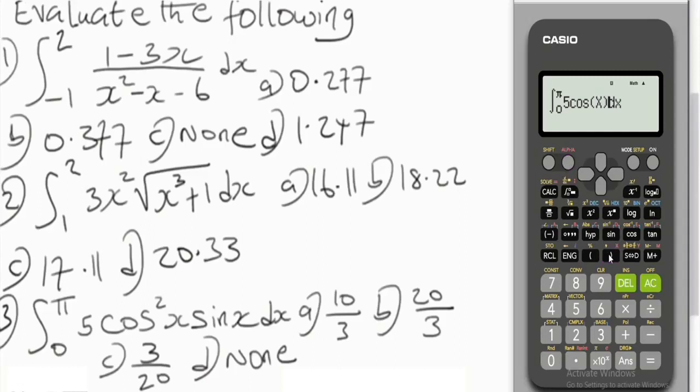You could do cos x times cos x but I prefer this pattern, it's easier. Let's proceed. Then we have sin x, input sin x, alpha and x, close the brackets. We are good to go. Let's now press equal to and get the output, very simple.